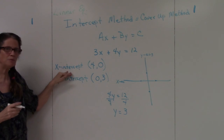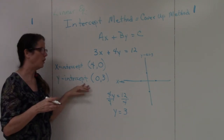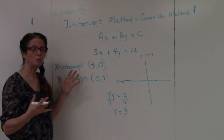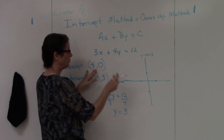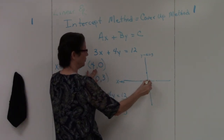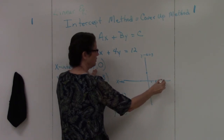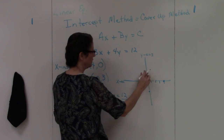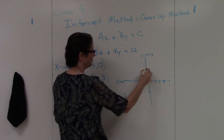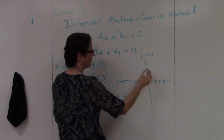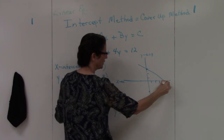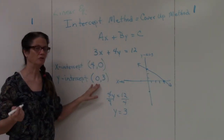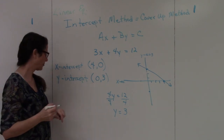My x-intercept is (4, 0) and my y-intercept is (0, 3) — two points. I graph those: one, two, three, four for the x-intercept, and one, two, three for the y-intercept. All I have to do is connect the points and I end up with a line. Let's try one more.